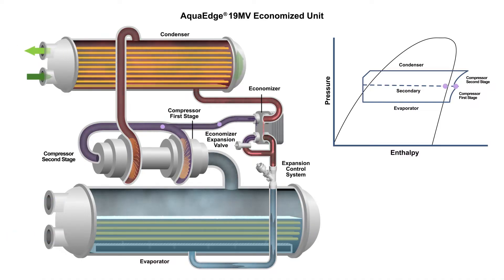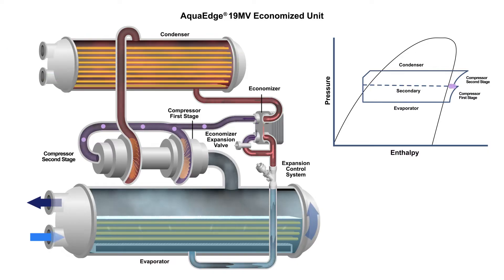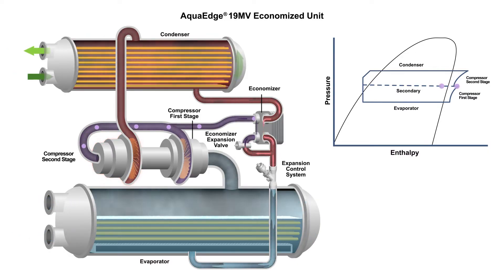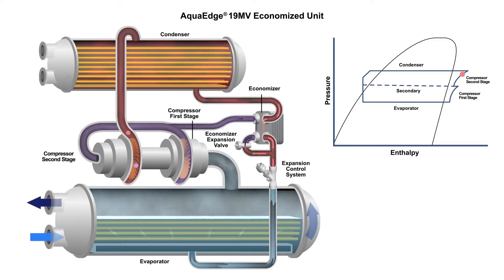Vapor leaving the compressor's first stage mixes with cooler intermediate pressure refrigerant vapor exiting the economizer's secondary flow. The compressor's second stage inlet guide vane helps equalize load between the two stages of the compressor, while the impeller accelerates the vapor, further increasing its temperature and pressure.